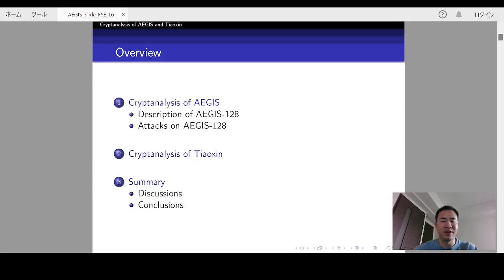This is an overview of this talk. First, I will introduce the cryptanalysis of AEGIS. Then I will introduce the application to Tiaoxin. Finally, I will make some discussions and draw the conclusions.